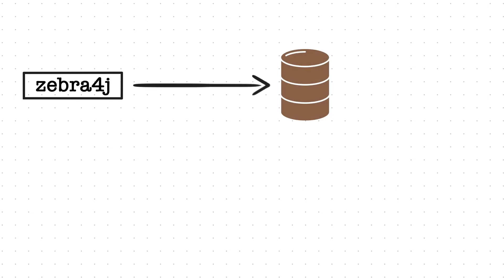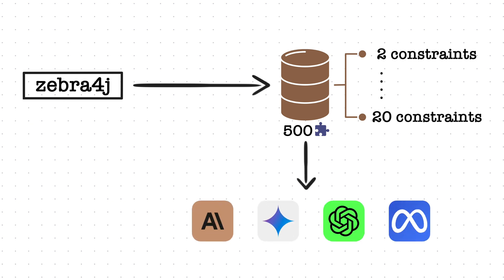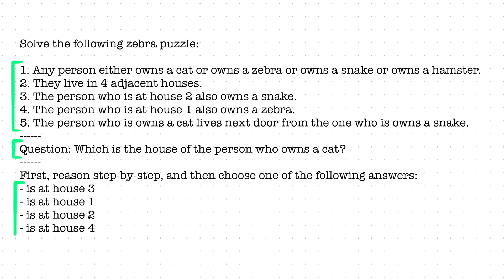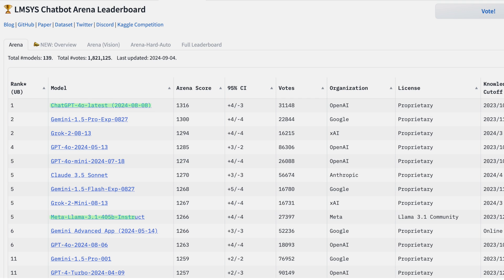Let's run some experiments and find out. I started by using Zebra4j, a generator for Einstein's riddles, and randomly generated a database of 500 puzzles. The generated puzzles varied in difficulty based on the number of constraints — the simplest had only two constraints, while the most complex had up to 20. I then used this database to query different language models. The prompt contains all the puzzle constraints, a single question, and four answer choices where only one is always correct. Using these prompts, I benchmarked most of the best-performing LLMs in Chatbot Arena: GPT-4o, Llama 3.1, Gemini 1.5 Pro, and Claude 3.5 Sonnet. I also included smaller versions of these models — like GPT-4o Mini and Gemini Flash — to see their performance gaps.